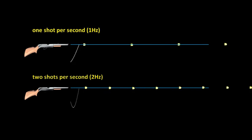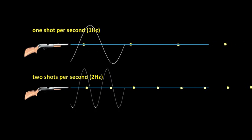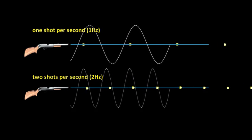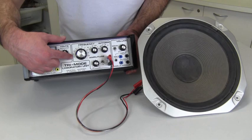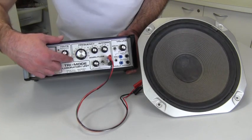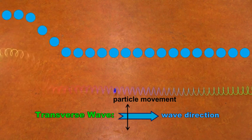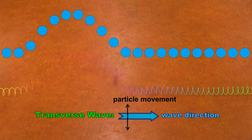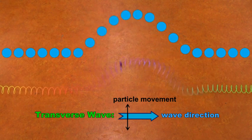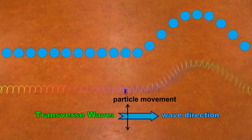We then look at waves in general. You will see an excerpt from this section soon. We look at transverse waves and longitudinal waves, wavelength, frequency, and wave speed.